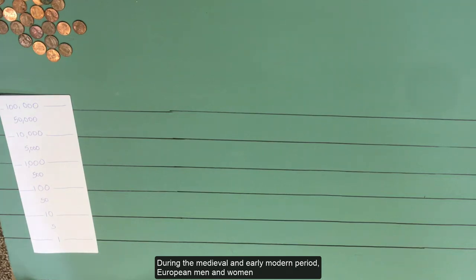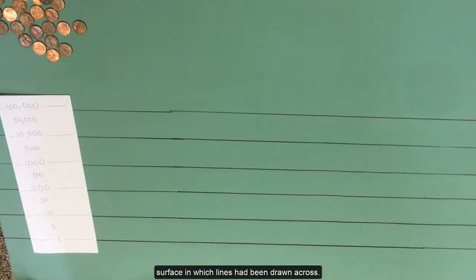During the medieval and early modern period, European men and women added, subtracted, and performed other arithmetic with something called a counting board, which was any sort of flat surface in which lines had been drawn across.